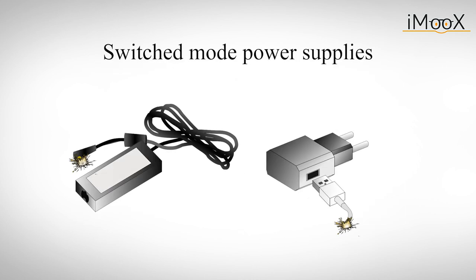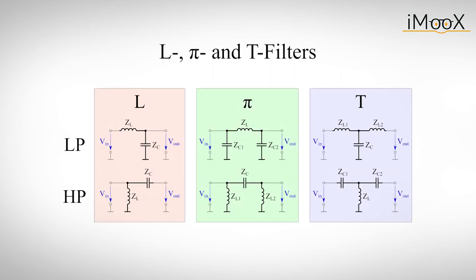A second important application for passive filters can be found in switched mode power supplies. How these circuits work will be topic of another video. For now you only need to know that they cause high frequency distortions which must be filtered. Therefore, a low pass filter is needed at the output of such a circuit. Three kinds of low pass filters are very common for this task. The L filter, the PI filter and the T filter.